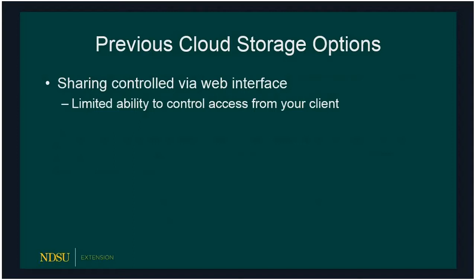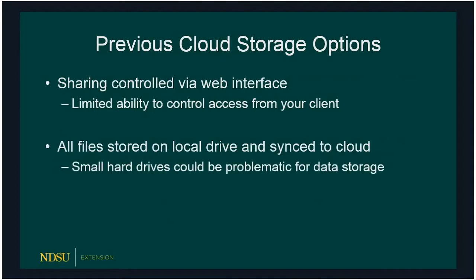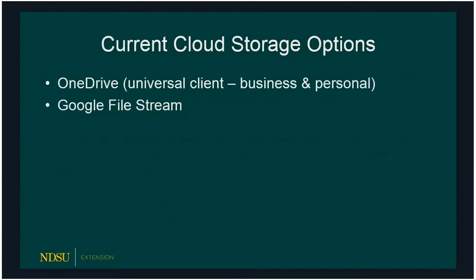Another issue in the past was that all your files were located on your hard drive and synced to the cloud — the cloud had a copy, but you also had to keep that same file on your hard drive all the time. Small drives can be problematic for data storage. If you had a lot of files, a lot of picture files, storing in the cloud is great, but keeping a physical copy on your hard drive meant it would fill up pretty quickly. The current cloud storage options address this.